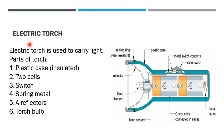Now we will discuss about electric torch. Electric torch is used to carry light. There are different parts of the torch: plastic case that is insulated, two cells, switch, spring metal, a reflector, and torch bulb.